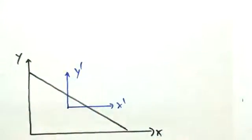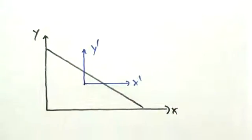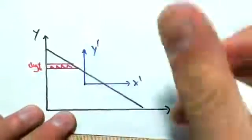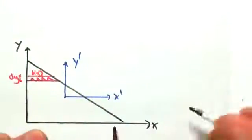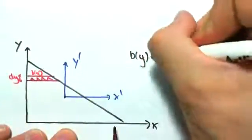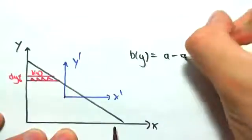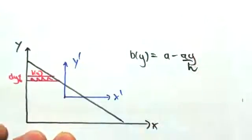We're taking strips horizontally for now. So we're looking at strips like this, just up there, where we have a section dy, and this is by, where we said by is equal to a minus ay on h. So that's just from the previous video.